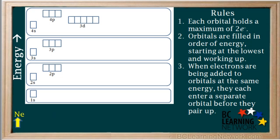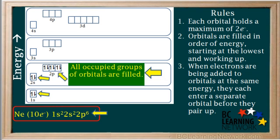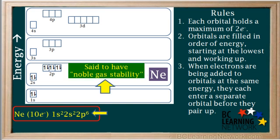Now we'll do neon, element number 10. A neutral atom of neon has 10 electrons. We put the first two in the 1s, the next two in the 2s. That takes care of four electrons, which means we have six more to add. We add these six electrons to the three 2p orbitals as shown. Notice that in neon, all occupied groups of orbitals are completely filled. This is a very stable arrangement, and neon is a noble gas — said to have noble gas stability. Other atoms tend to gain, lose, or share electrons in order to achieve noble gas stability. Notice neon is at the end of the second period of the periodic table.